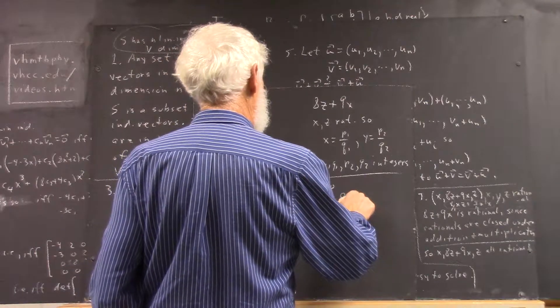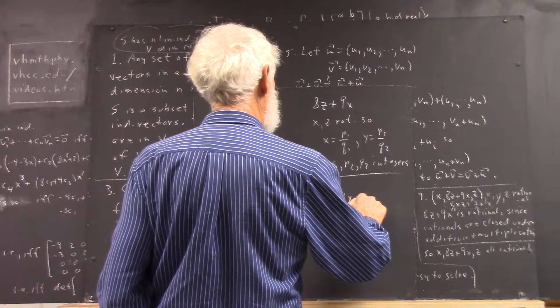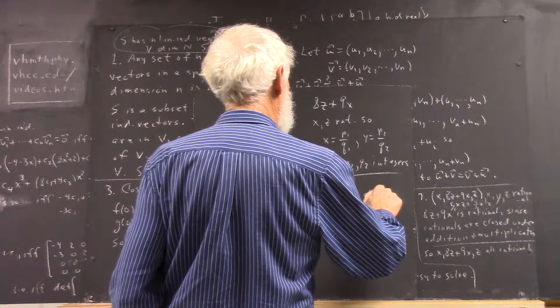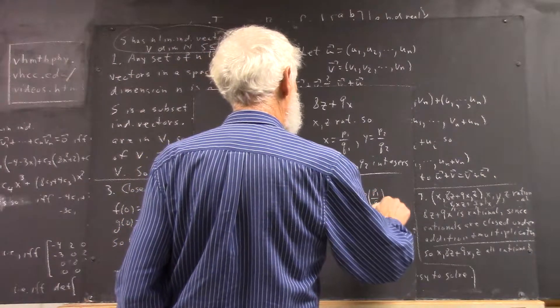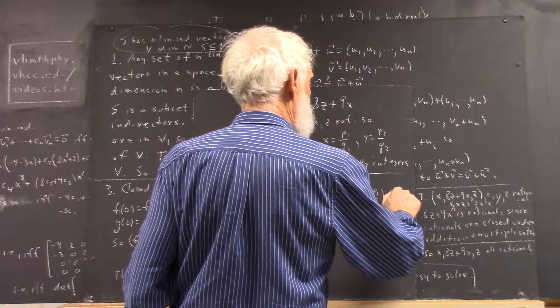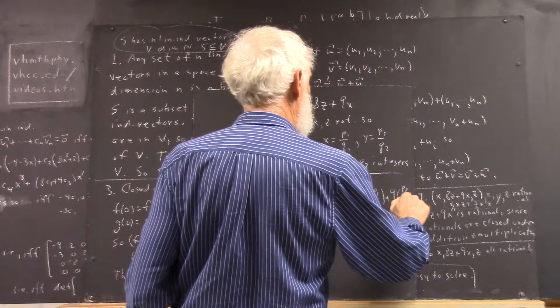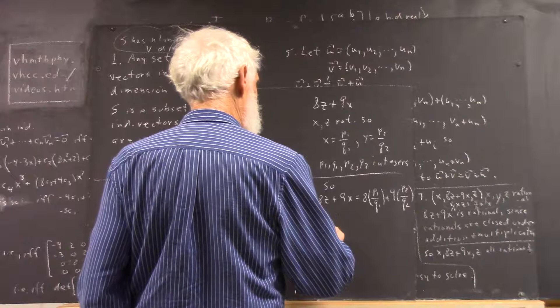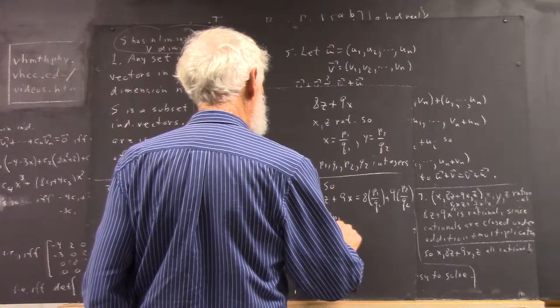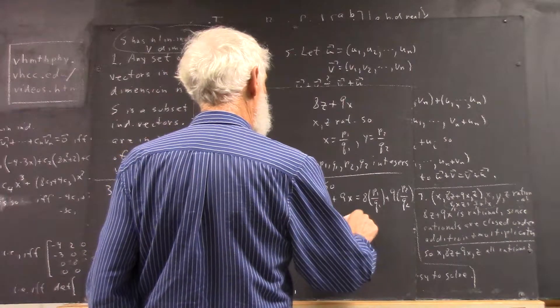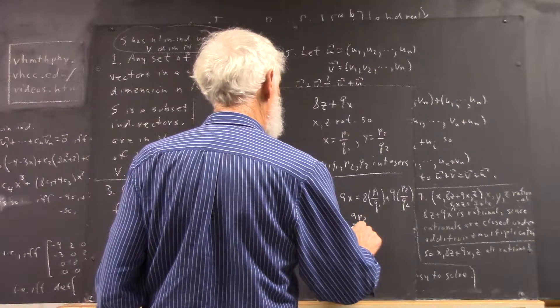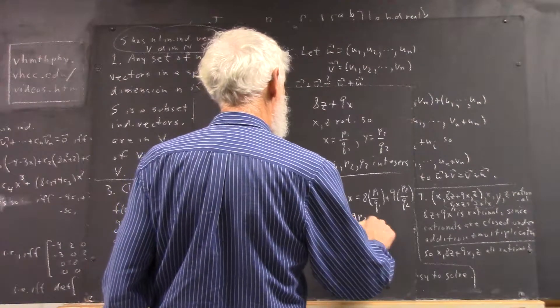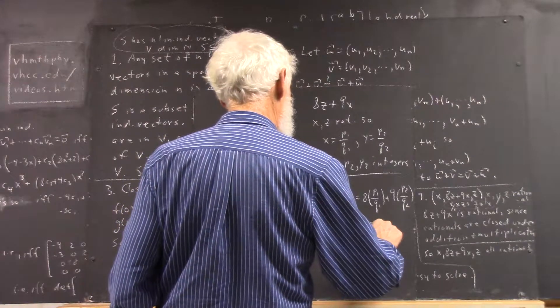So, 8z plus 9x is equal to 8 times p1 over q1 plus 9 times p2 over q2. That equals what?